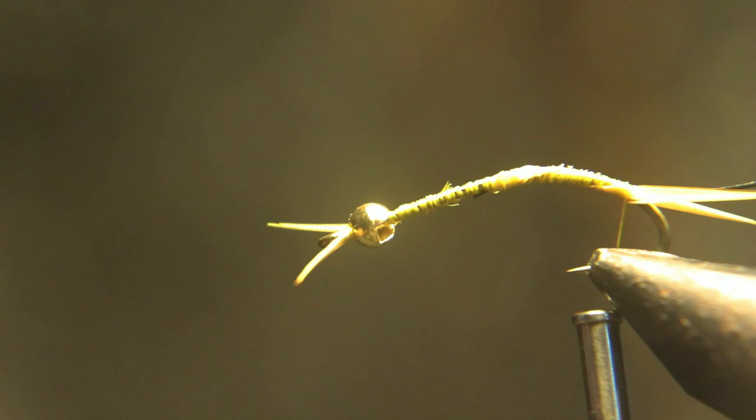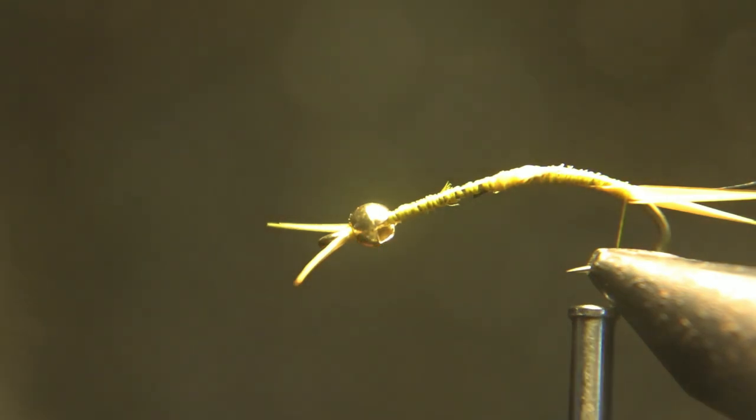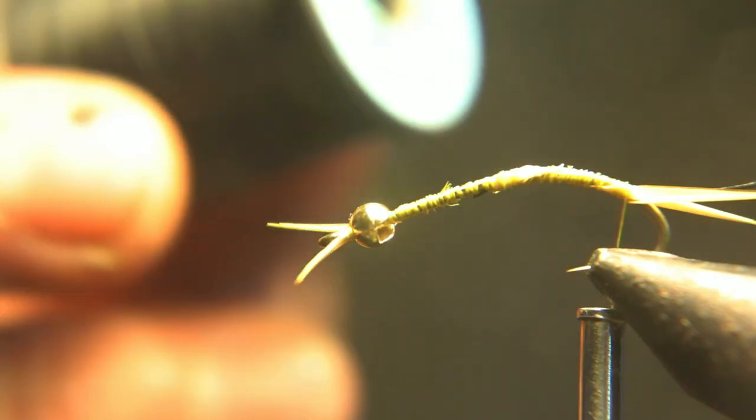I snuck in a piece of 200 denier black thread for a rib. You could also use wire. I like thread; you can use wire. Wire makes them a little more solid, but I'm going to use this thread as a rib.